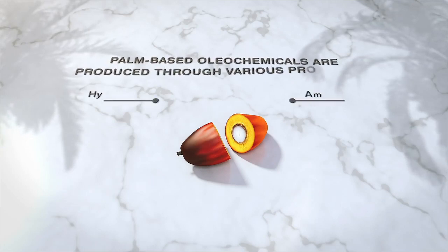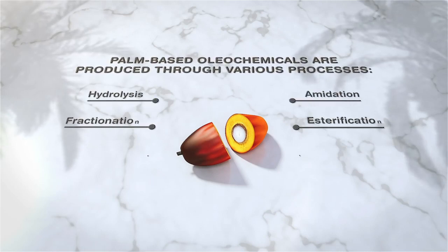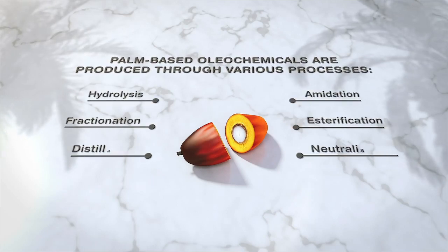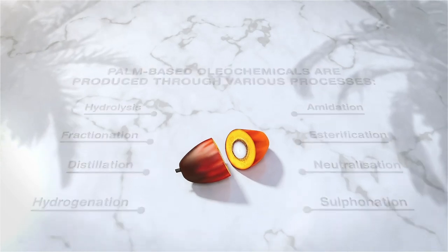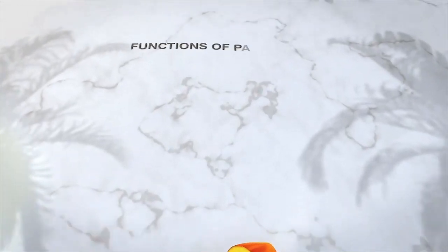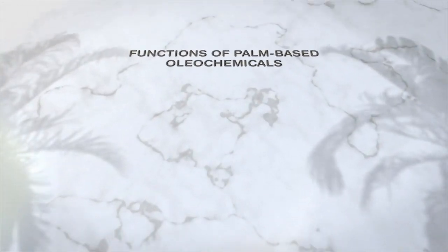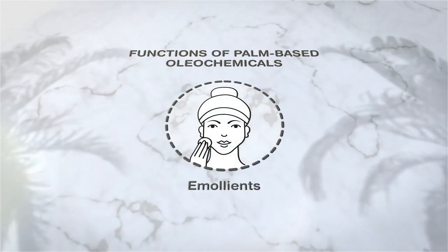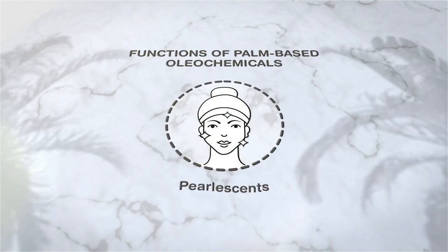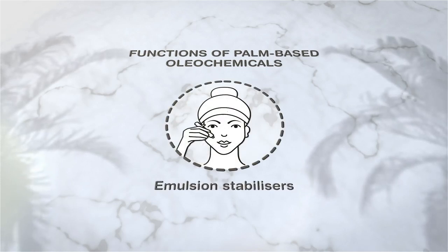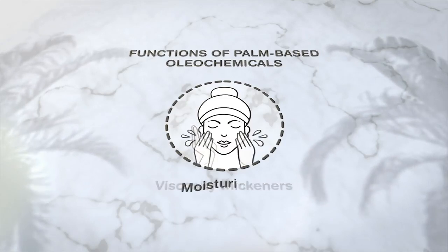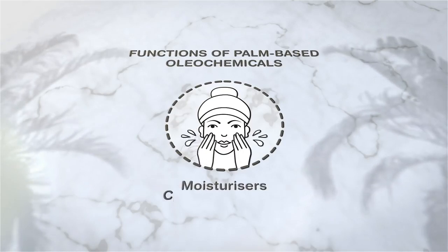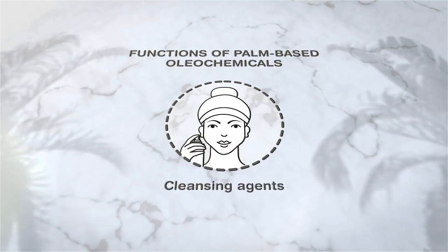Palm-based oleochemicals are produced through various processes and also have extensive applications. It allows them to cover a plethora of functional efficacies, ranging from emollients, pearlescence, emulsion stabilizers, foam boosters, viscosity thickeners, moisturizers, cleansing agents and many countless others.